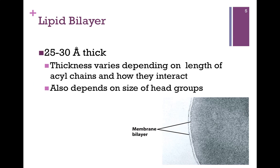The bilayer is about 25 to 30 angstroms thick, but that can depend on the length of the chain and how they interact with each other, and some of that could depend on the size of the head group as well. Here we have an electron micrograph of the cell, and you can see the membrane bilayer indicated by the black arrows.